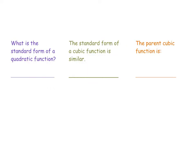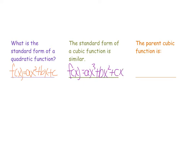When written as an equation, the cubic function is very similar to the quadratic function. The standard form of a quadratic function can be written as f(x) = ax² + bx + c, while the standard form of a cubic function is f(x) = ax³ + bx² + cx + d. The highest degree of a quadratic function is 2, and the highest degree of a cubic function is 3.